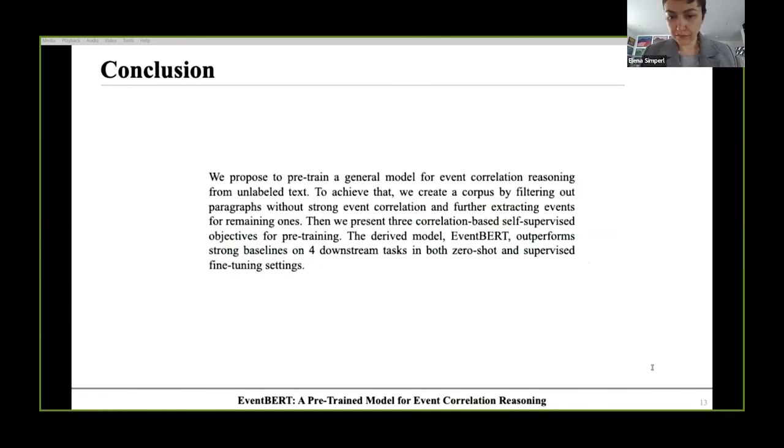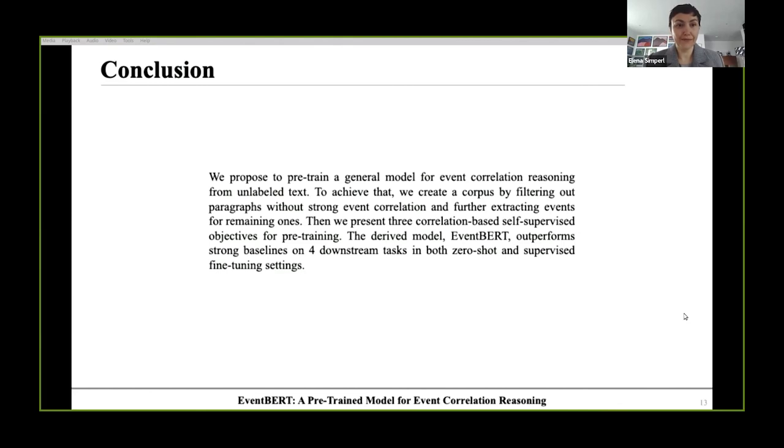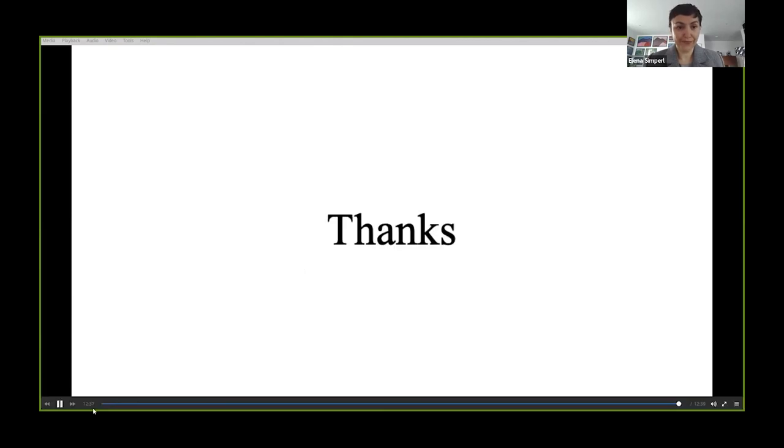We propose to pretrain a general model for event correlation reasoning from unlabeled text. To achieve that, we create a corpus by filtering out paragraphs without strong event correlation and further extracting events for remaining ones. Then we present three correlation-based self-supervised objectives for pretraining. The derived model, EventBERT, outperforms strong baselines on four downstream tasks in both zero-shot and supervised fine-tuning settings. Thank you.